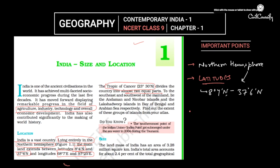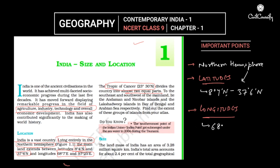Next we need to look at the longitudes. The longitudinal extent of India is 68 degrees 7 minutes east to 97 degrees 25 minutes east. So we have now seen both the latitudes and the longitudes.